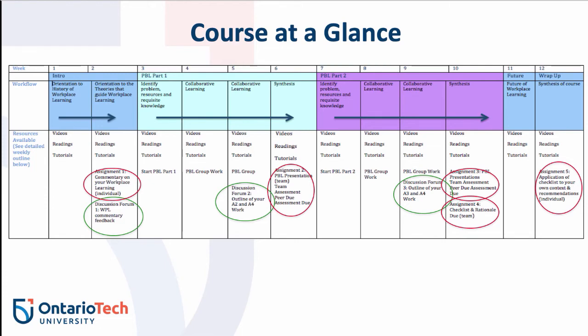The second and third discussion forums are for your group to report back on how you're progressing toward your first PBL. Discussion Forum 3 is for your outline of PBL Part 2 and is associated with assignments 3 and 4. This may seem like a lot to take in right now, but once you start the course you'll understand how it's laid out.